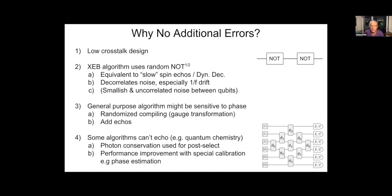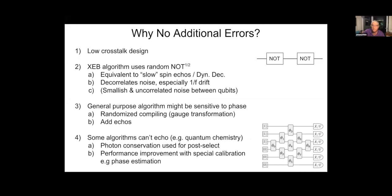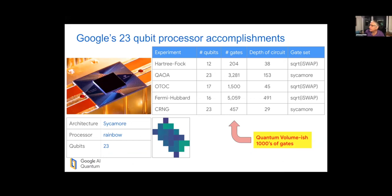Why no additional errors? We've worked for many years hardware to make a low crosstalk design. The XEB algorithm uses basically random NOT gates. So you're doing some kind of spin echoing and dynamic decoupling that decorrelates noise, especially one over F drift and the like. And this kind of echoing can be used for a general purpose algorithm called gauge transformation and randomized compiling.